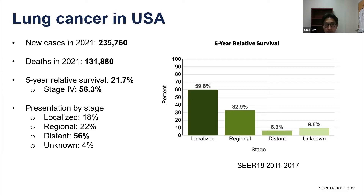One of the reasons why lung cancer has such poor mortality is because a lot of patients, when they present, they present with distant metastasis and also regionally advanced disease. The five-year overall survival for stage four is 6.3%, as you can see on the graph here — not 56.3. That is our goal for the future, but currently it is 6.3% five-year overall survival.